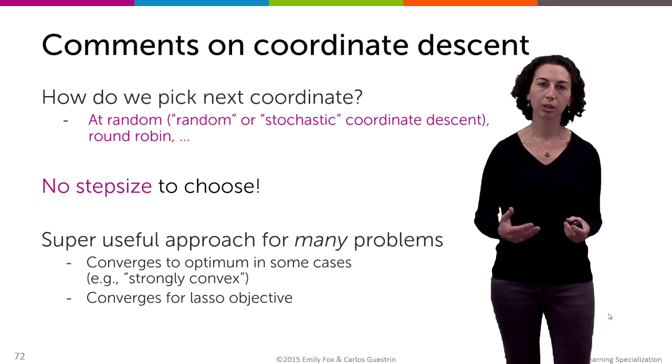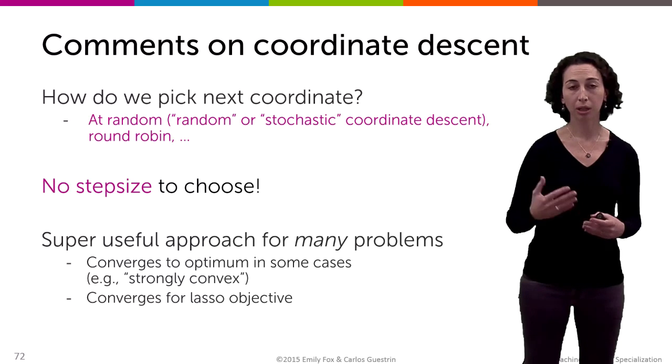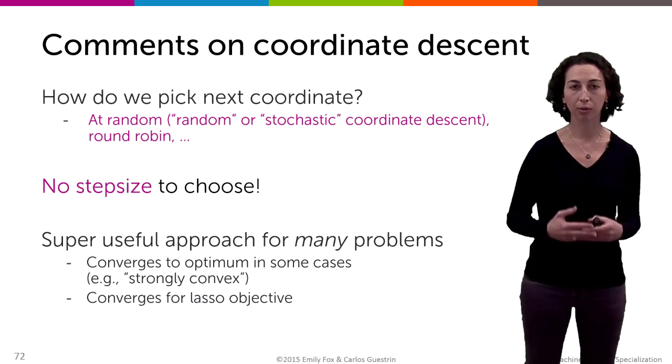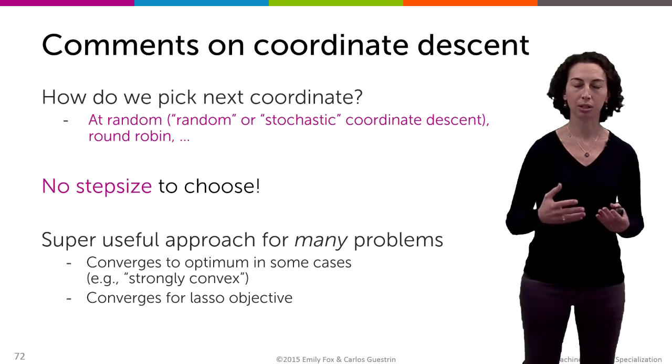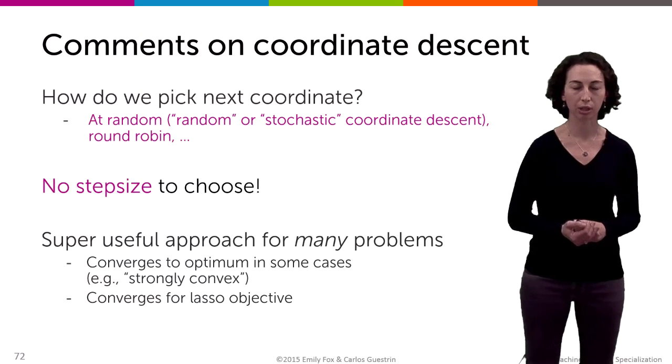And this algorithm is really useful in many, many problems. And you can show that this coordinate descent algorithm converges for certain objective functions. One example of this is if the objective is strongly convex. And we talked about strongly convex functions before.